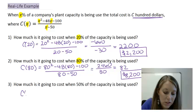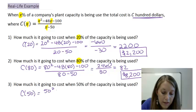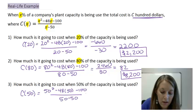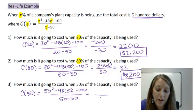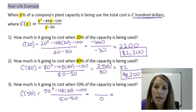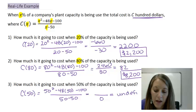Again, we plug in 50 into our equation. 50 squared minus 48 times 50 minus 100 on the top, over 50 minus 50 on the bottom. Now, I'm not even going to simplify the top, because I know the bottom simplifies to be 0. And I know that I cannot divide anything by 0. So, C of 50 is actually undefined.